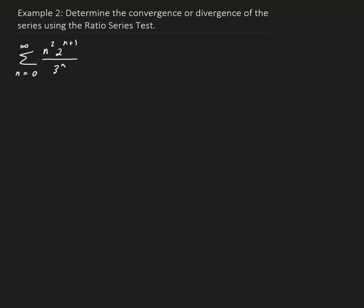In this example, we want to determine whether this series converges or diverges by using the ratio test. What we need to do is take the limit of the ratio of the (n+1)th term and the nth term, and from there we can see whether it's going to converge or diverge.